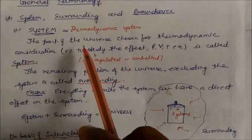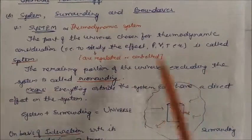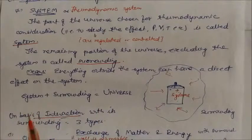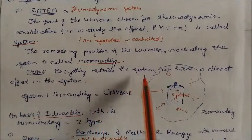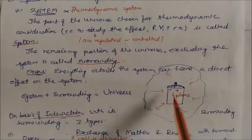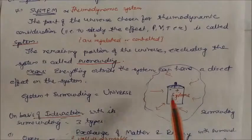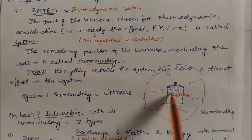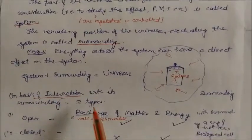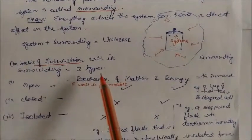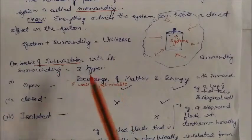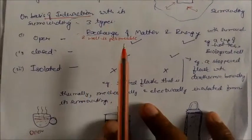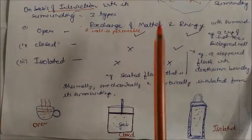The remaining portion of the universe excluding the system is called the surroundings. The universe is made up of two parts: the system and the surroundings. The system can affect the surroundings and vice versa — interaction takes place between them. On the basis of this interaction with the surroundings, there are three types of systems: open system, closed system, and isolated system.